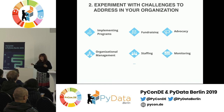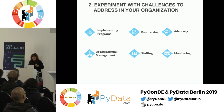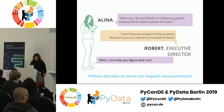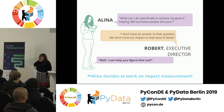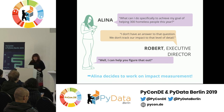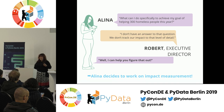All of these can be addressed in one way or another with data science. But that's where the creativity comes in — talking with the organization to find out which is the best way to do that. Alina had this conversation with Robert, the executive director of the organization she wants to work with. She asked him: what can I do specifically to achieve my goal of helping 300 homeless people this year? Robert said he didn't really have an answer — they don't track their impact to that level of detail. What Alina realized as a data scientist is: well, I can help you figure that out, because that's a data problem. So what Alina decides to work on is impact measurement for that organization.